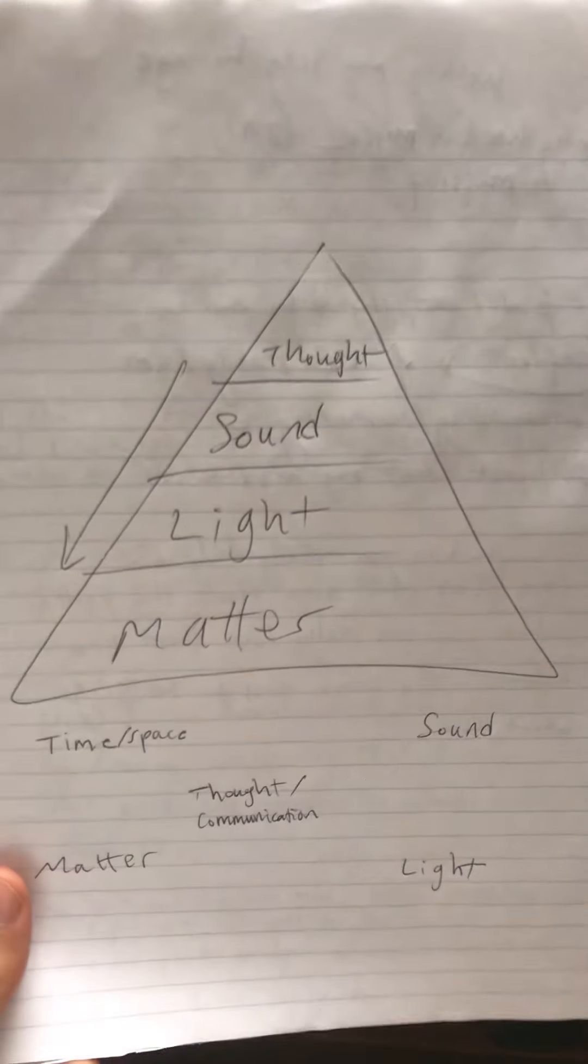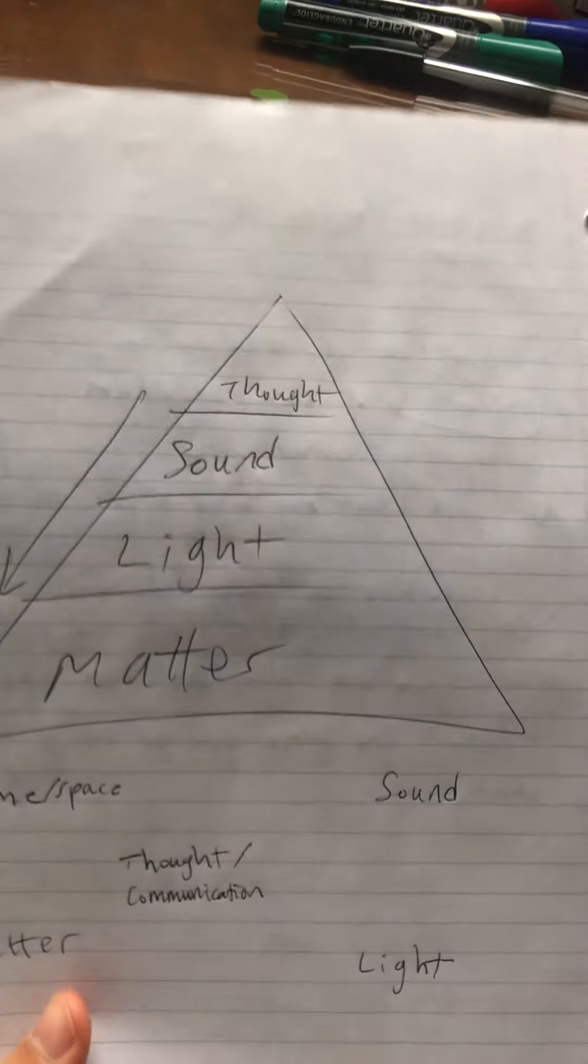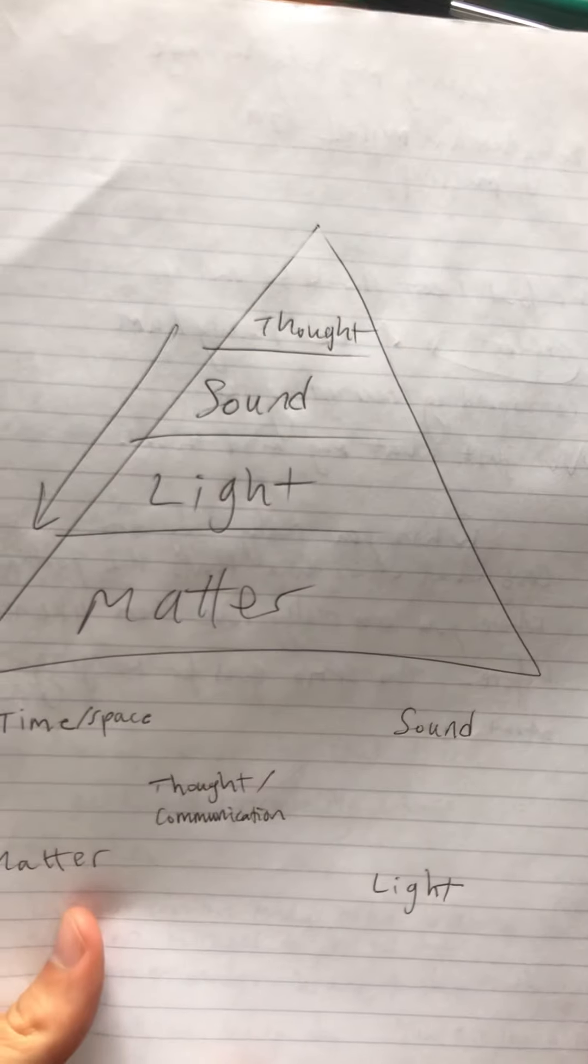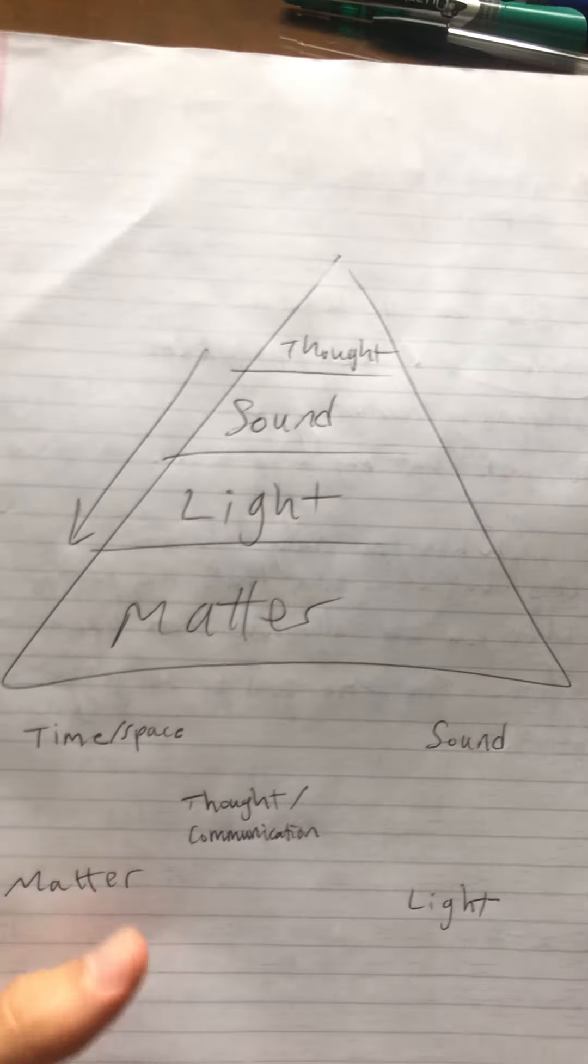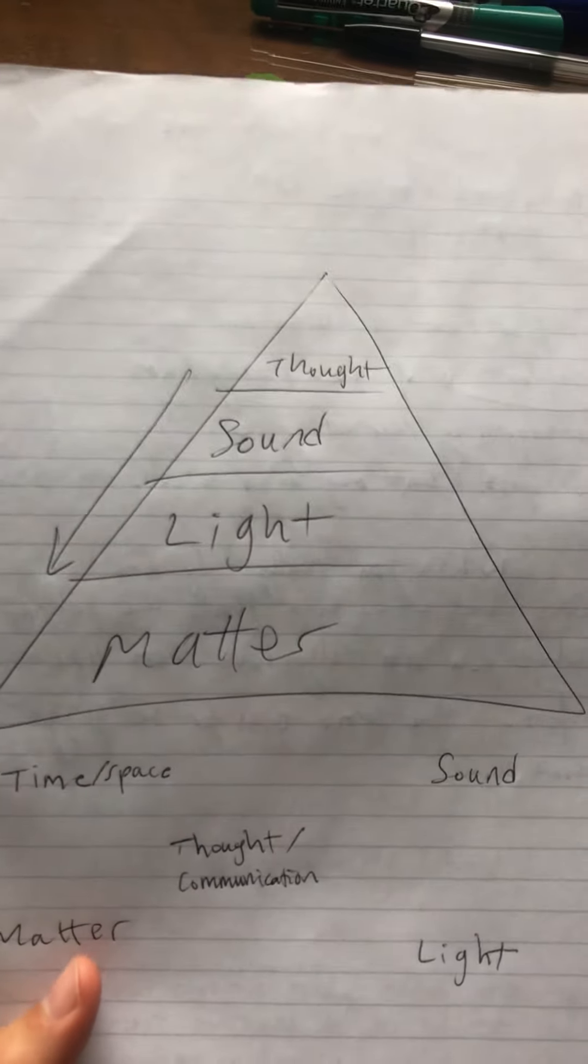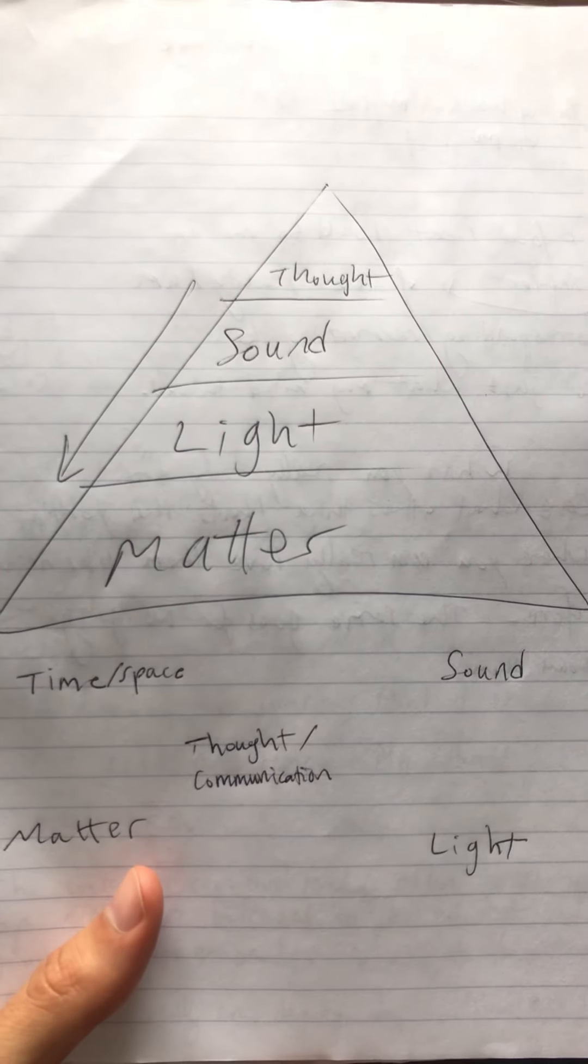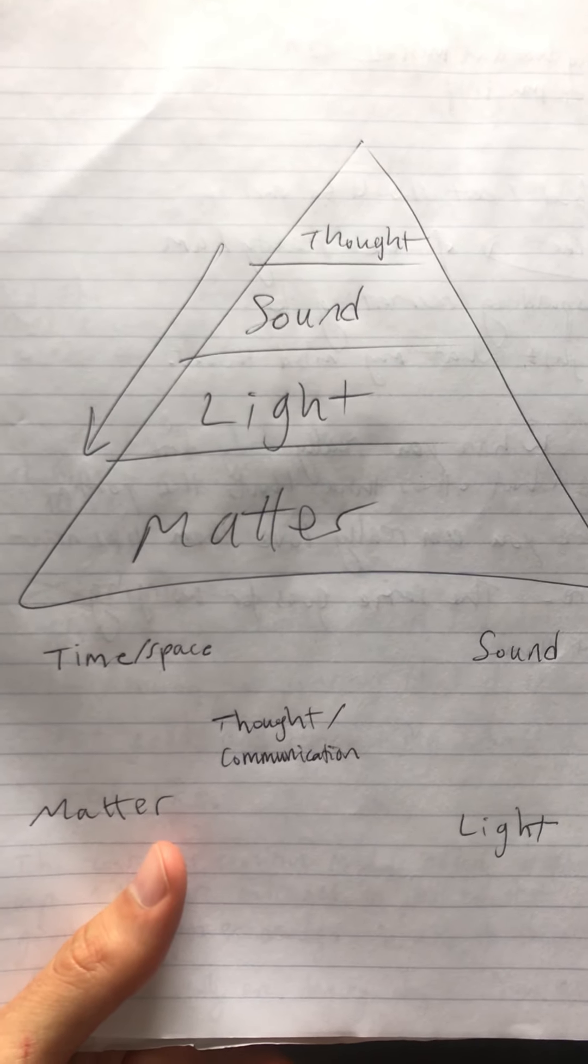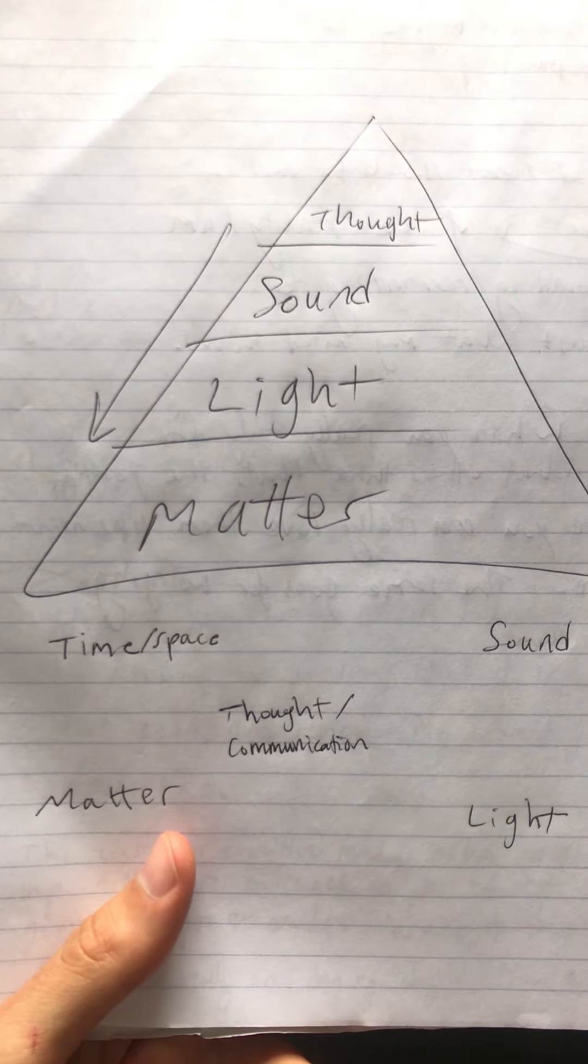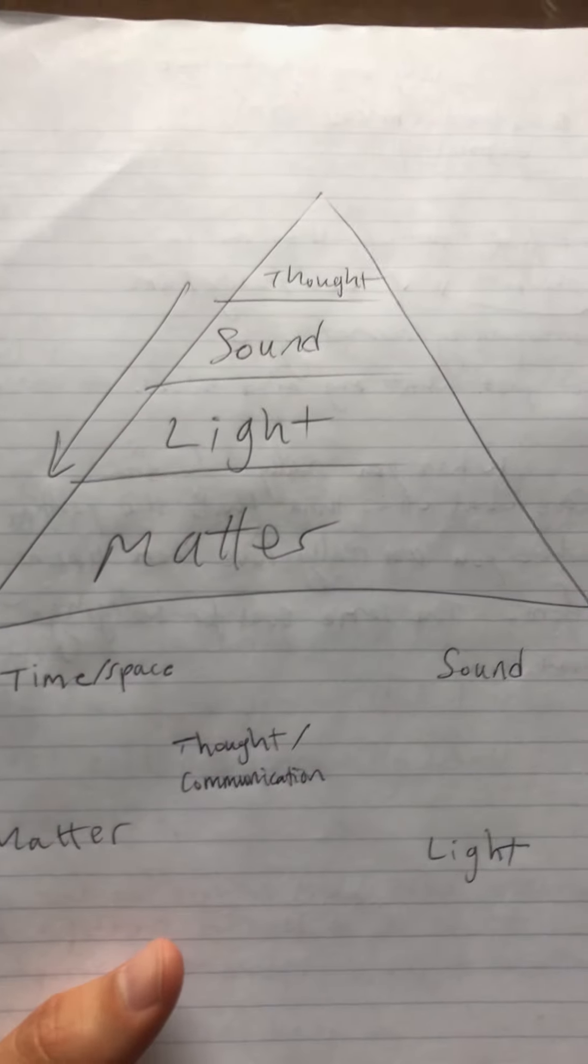I was thinking about these four components in relation to human design and the hexagram so if you're for example if you're stuck thinking about material reality